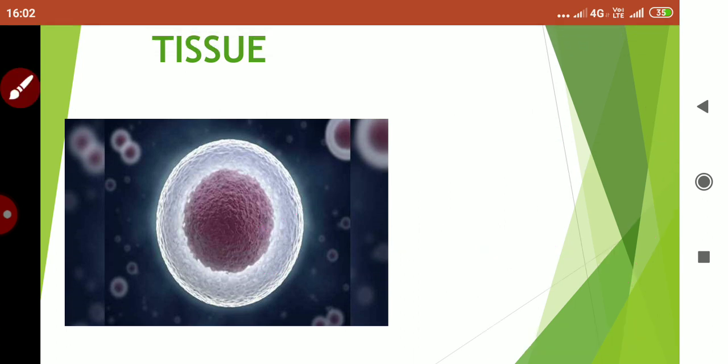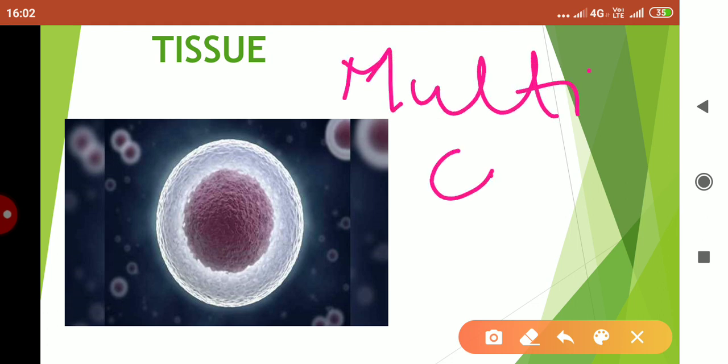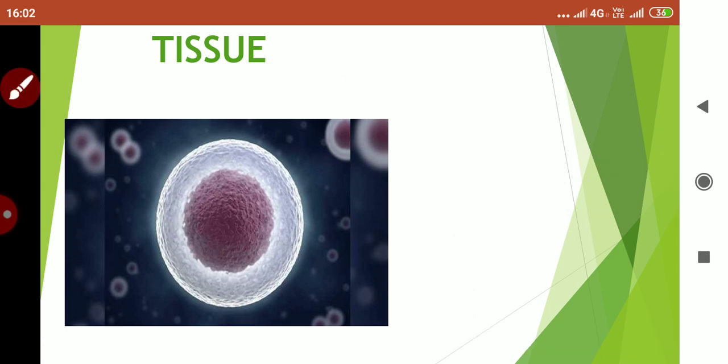But what about the organisms having a multicellular organization? Our multicellular organisms can also perform the same function but there occurs division of labor. Now what do you understand by division of labor? All the work is distributed among the cells.